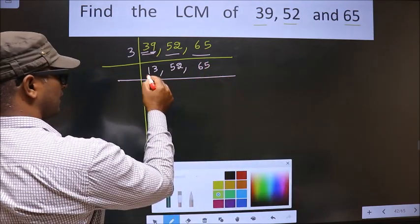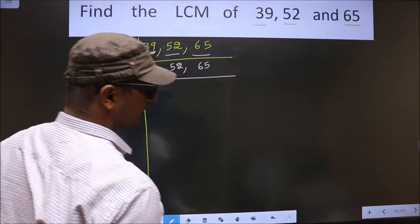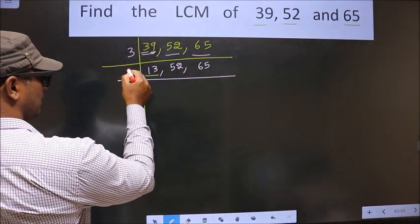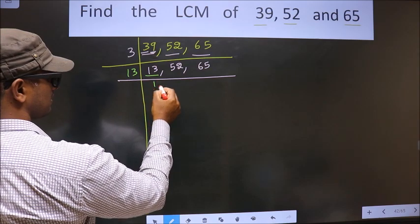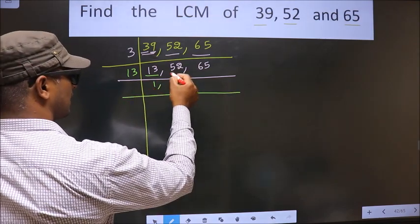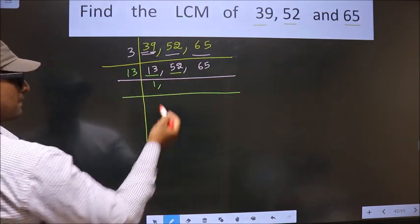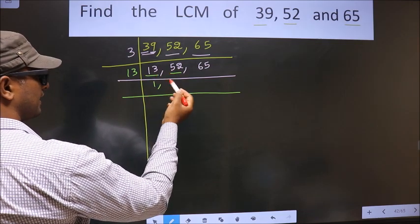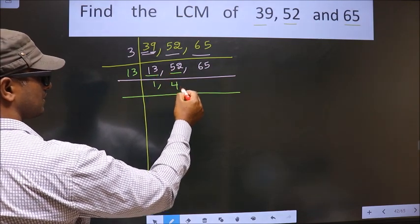Okay. Now here we have 13. 13 is a prime number, so we take 13 once is 13. The other number is 52. When do we get 52 in the 13 table? See, 13 fours is 52.